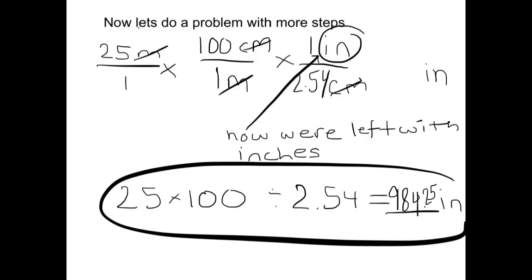And that is what we are trying to convert the problem to. So what we do now is we multiply 25 times 100 because those are both on the top of the equation, and divide by 2.54 because that's on the bottom of the equation. And the answer is 984.25 inches.